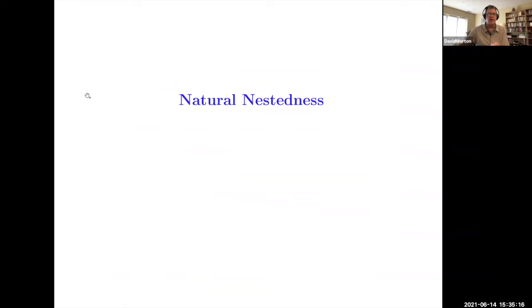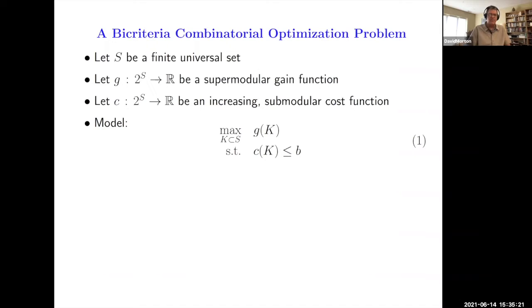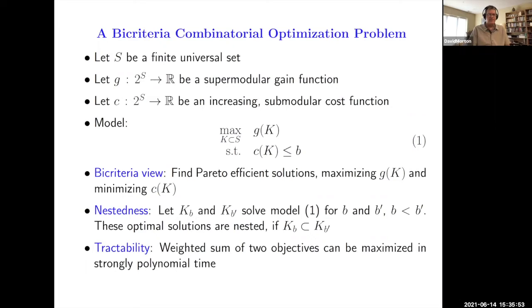So how does this notion of nestedness, like you got a knapsack problem and you bump up the budget and you keep all your old items and just possibly add a new item, how can this come about in a natural way? Here's a combinatorial optimization model where we're trying to maximize a gain function subject to a knapsack or cardinality constraint. That gain function we're going to assume here is supermodular, the discrete version of convexity, increasing returns to scale here. And we're going to assume that the cost function here is submodular. We're really going to take a bi-criteria view that we want to maximize gain, but we want to minimize cost.